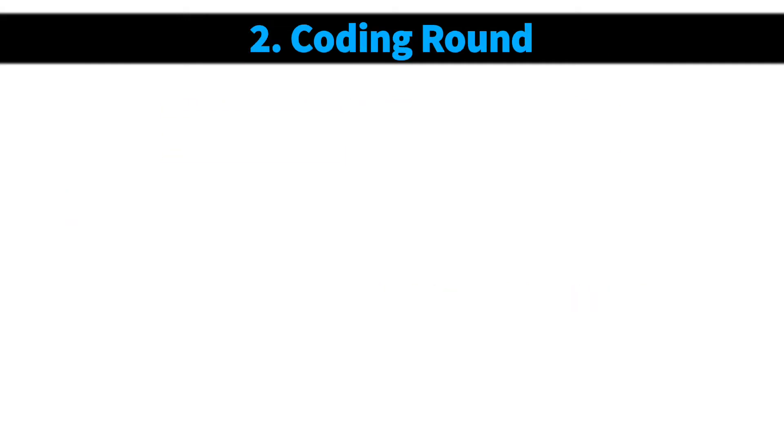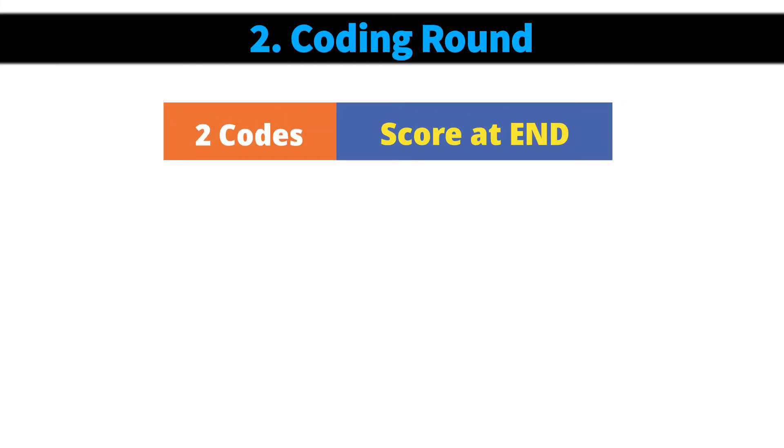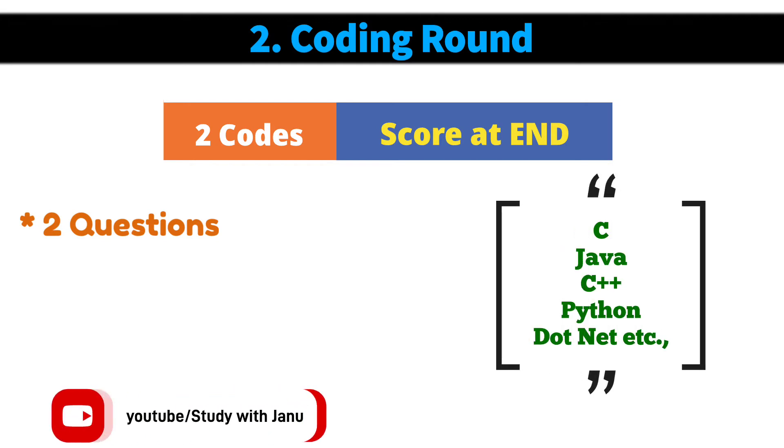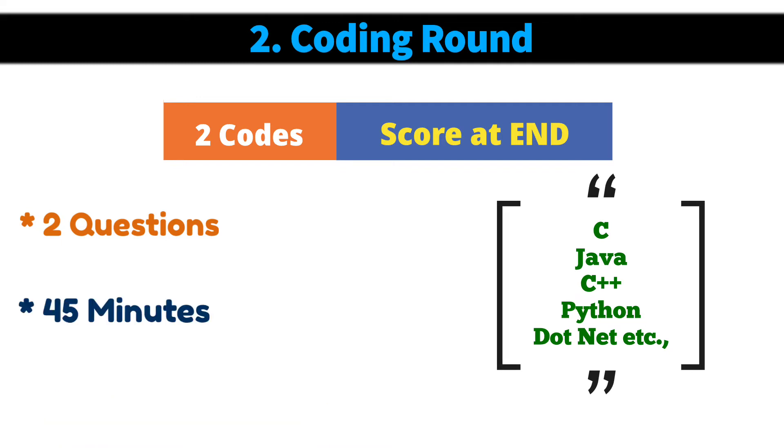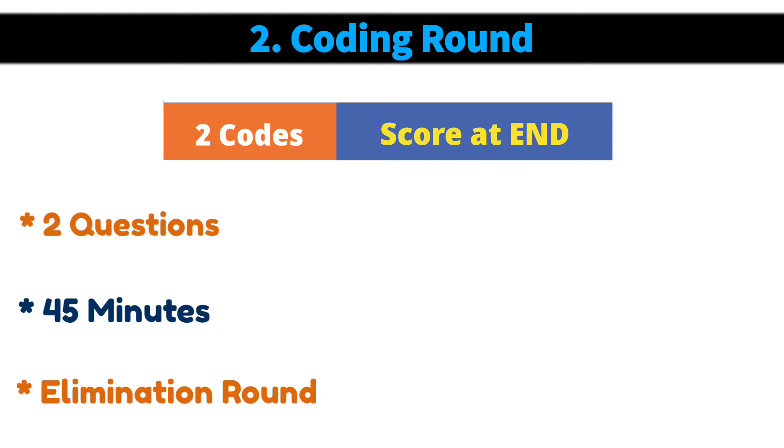After clearing cognitive and technical assessment, you'll have the coding round. This is the second round in the recruitment process. In this round, you will have two coding questions that can be solved in any language like C, Java, C++, Python, .NET, etc. You will have 45 minutes to complete this round. This is an elimination round.